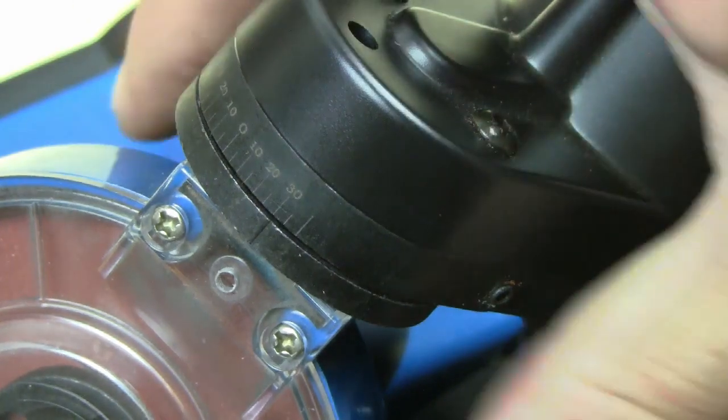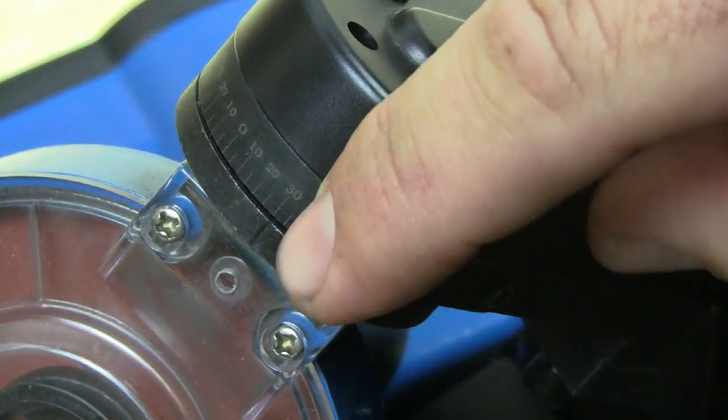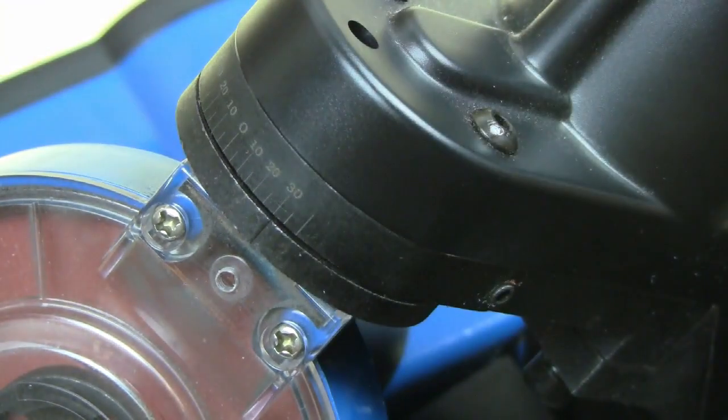To set the angle of the cutter head, take note of the scale and see what it reads when the head is at its extents. So currently we're set at about 30 degrees.